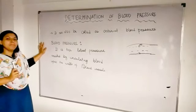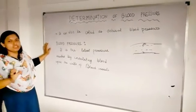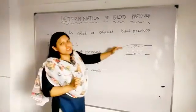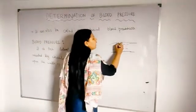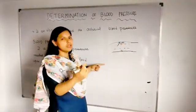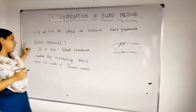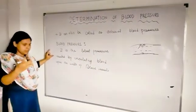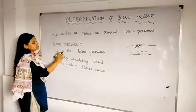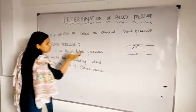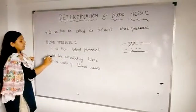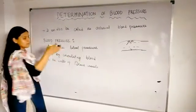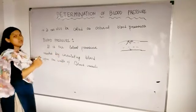First of all, what do you mean by blood pressure? Simply, when the blood flows in our vessels, the pressure it exerts on the walls of the vessels is called blood pressure. In our theory, we can write that it is the lateral pressure — lateral means from one side to the other — lateral pressure exerted by circulating blood upon the walls of the blood vessels.